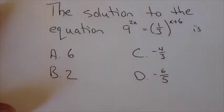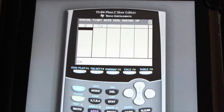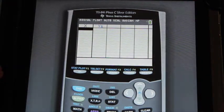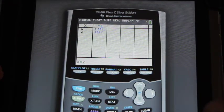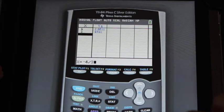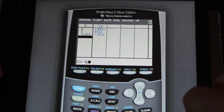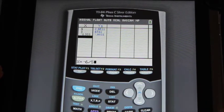And so what I'm going to do here is use the options in the multiple choice question. So 6, enter, 2, enter, negative 4 thirds, enter, negative 6 fifths, enter.